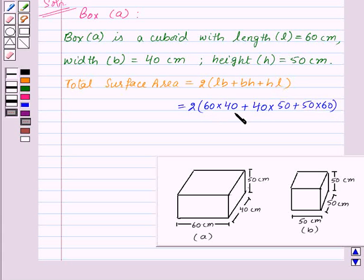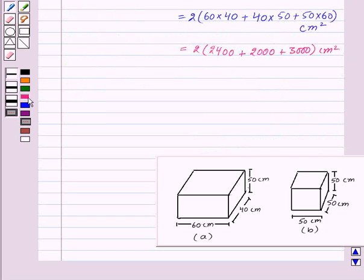Now here the unit will be cm × cm, that is cm². So this will give us 2(2400 + 2000 + 3000) cm², that is 14,800 cm². So the total surface area of box A is 14,800 cm².